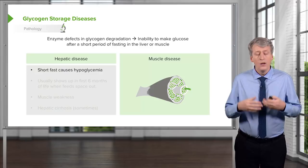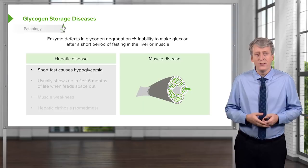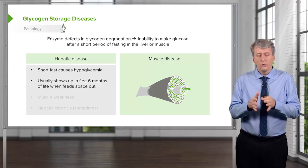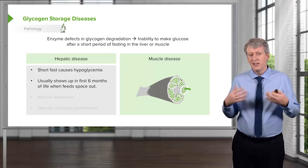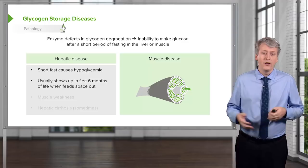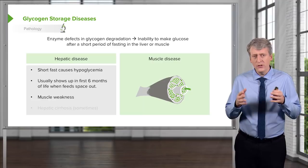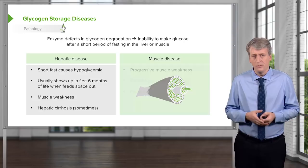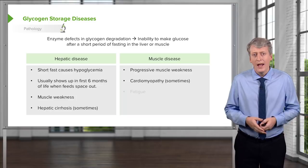It usually shows up in the first six months of life as children start to space out their feeds. Typically a newborn baby is eating every two hours, so the glycogen stores aren't that important. As they get older, they rely on their glycogen stores more because they're going longer distances between feeds. These patients can present with muscle weakness and hepatic cirrhosis at times. The muscle disease is a progressive muscle weakness and can sometimes involve the heart as well. In some varieties of glycogen storage diseases, the cardiomyopathy is the most important thing.